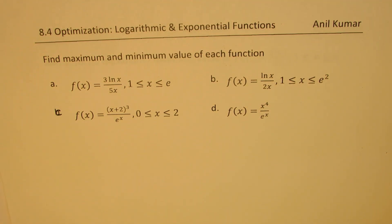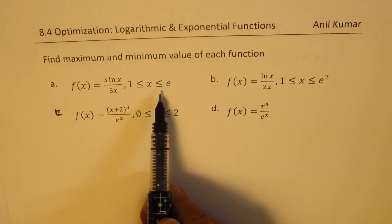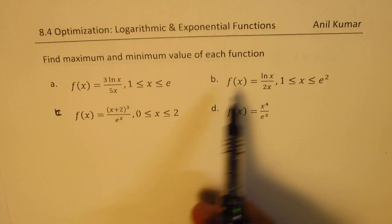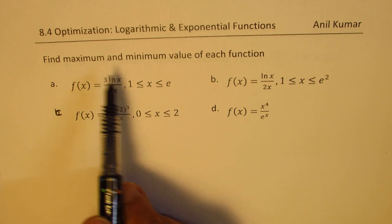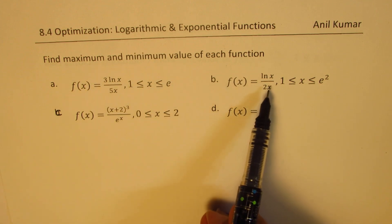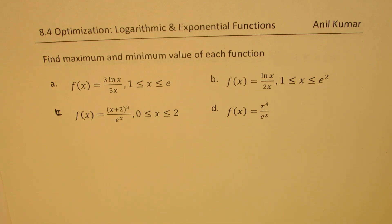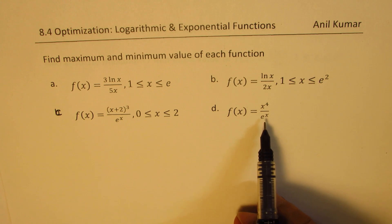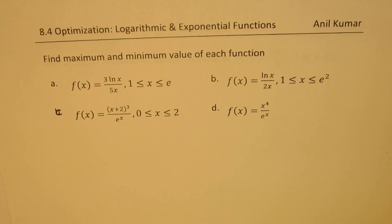It is important to understand that whenever we have a boundary condition for finding maximum and minimum with a closed interval, as given in the first three examples, we will surely have absolute maximum and absolute minimum. So in these three cases we are looking for absolute maximum and minimum. In the last case, we are looking for local maximum and local minimum, which will be at the turning point.